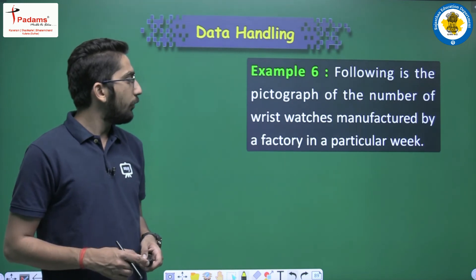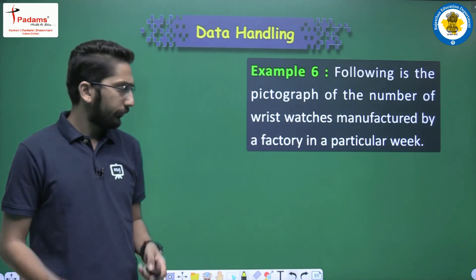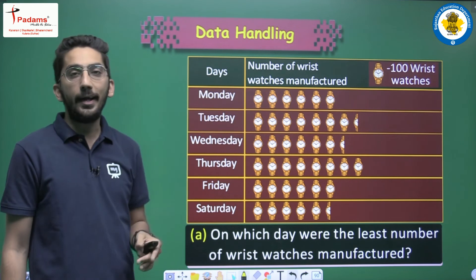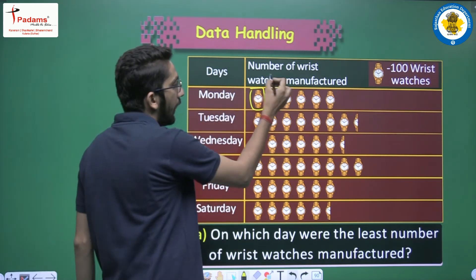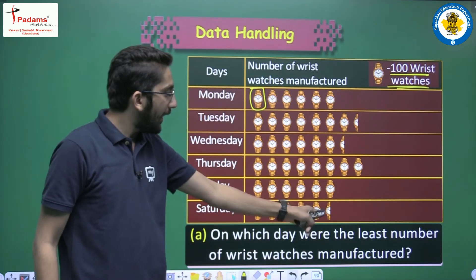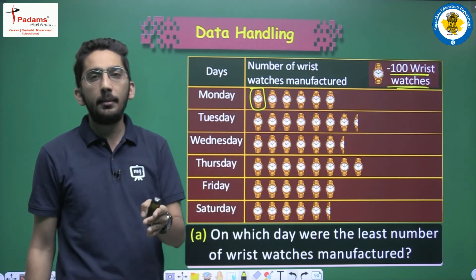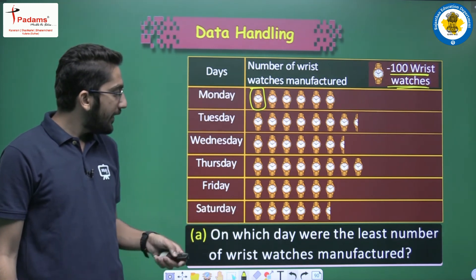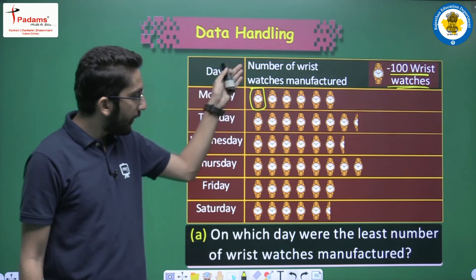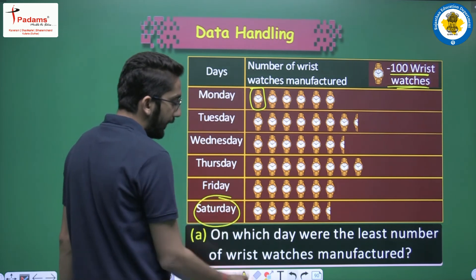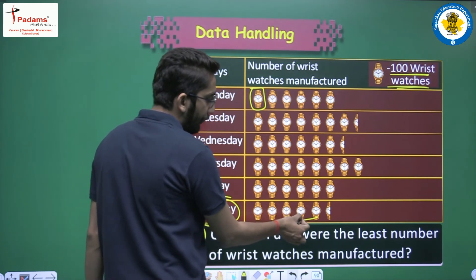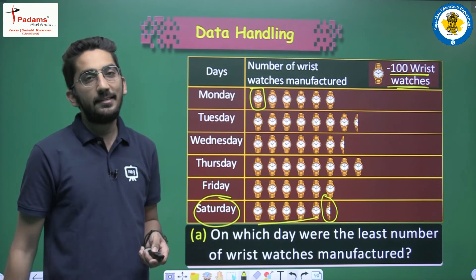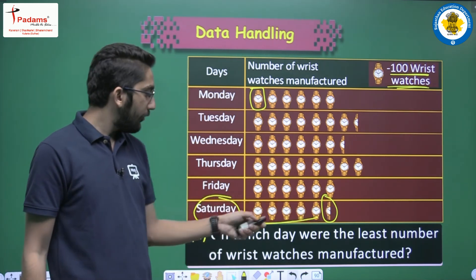The following pictograph shows the number of wrist watches manufactured by a factory in a particular week, from Monday to Saturday. One image represents 100 wrist watches. Some half images are also visible — we treat these as close to 50, meaning less than 100. On which day were the least number of wrist watches manufactured? The least is on Saturday — there are 5 complete images (500) and one half image, so more than 500 but less than 600, approximately 550.